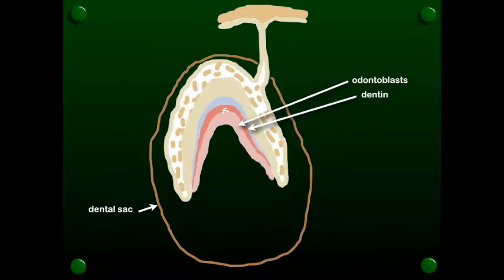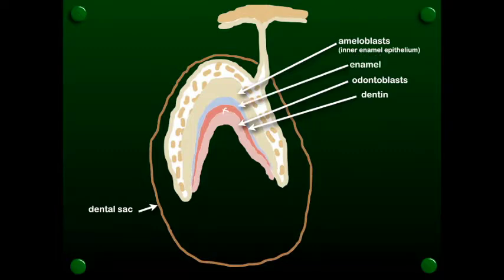Then we have that inner enamel epithelium is going to differentiate further into what we know as ameloblasts. Those ameloblasts then start to produce enamel.